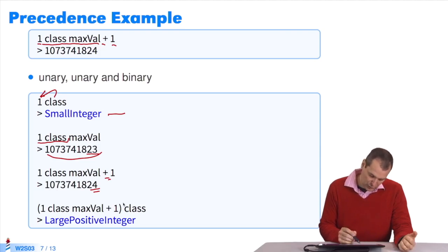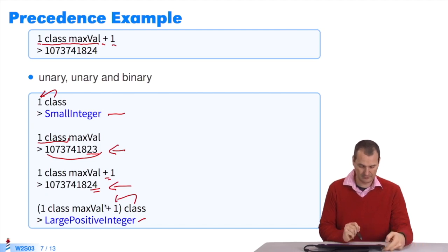I write parentheses, and I send class. It returns large positive integer. This is the largest of small integers, and that's the smallest of large integers. I wrote parentheses, because without them, class would have been sent to one. I don't want that. I want to send class to the result.